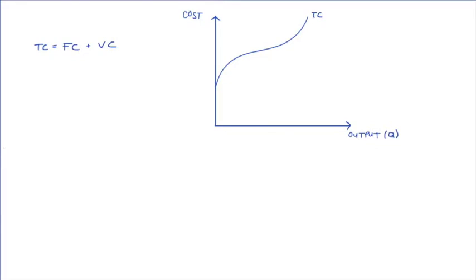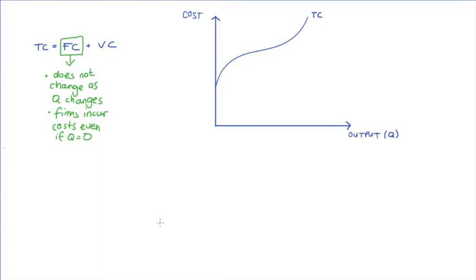Total cost is the sum of all fixed costs and all variable costs. Our fixed costs do not change as we change quantity — they don't depend on how much we produce, which is why they're called fixed costs. As a consequence, they're costs the firm incurs even if it produces nothing, even if output Q equals zero. On the diagram, if quantity is zero our total cost equals the vertical axis intercept. That's exactly what fixed costs represents — a straight horizontal line that doesn't vary as we increase output.